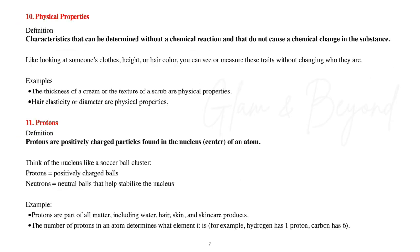Number ten: physical properties. Physical properties are characteristics that can be determined without a chemical reaction and do not cause a chemical change in the substance. Like looking at someone's clothes, height, or hair color — you can see or measure these traits without changing who they are. Examples include the thickness of a cream, the texture of a scrub, hair elasticity, or hair diameter.